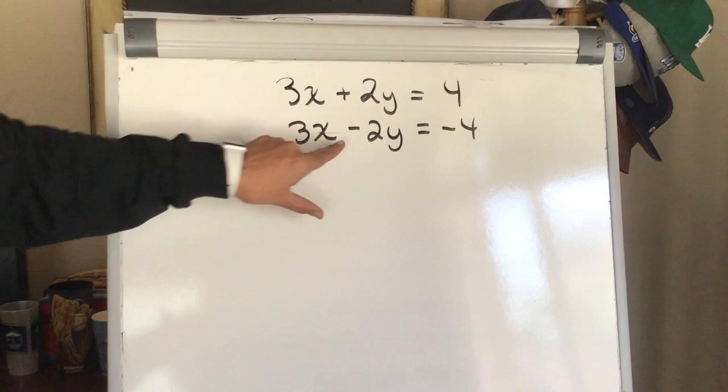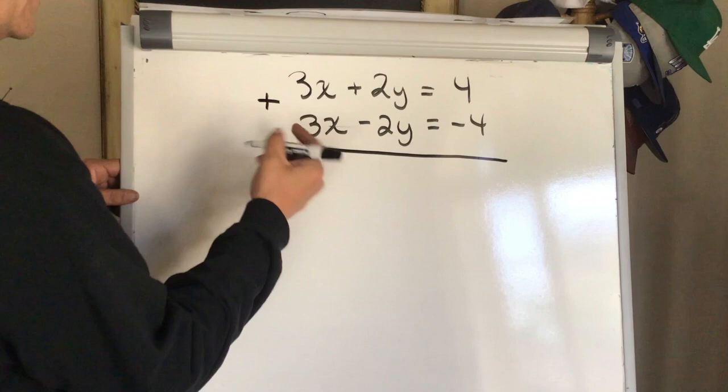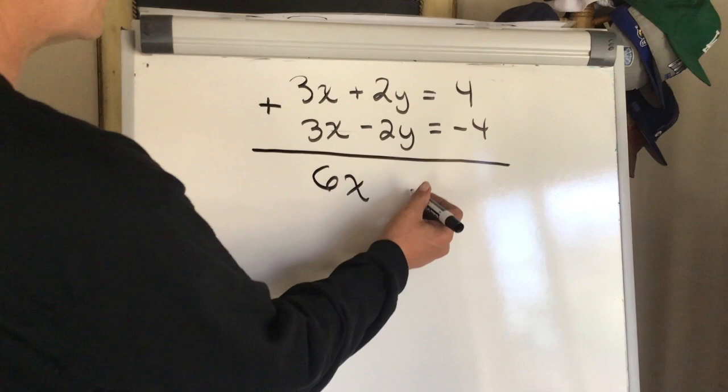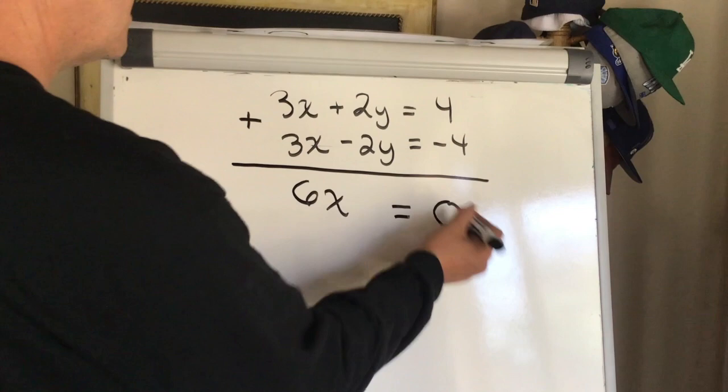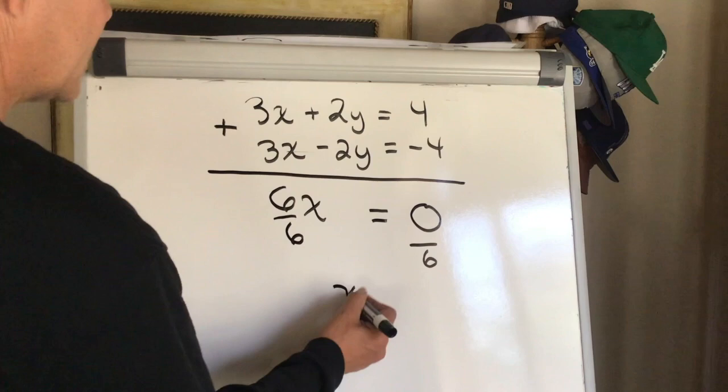So when I combine these or add them, 3x plus 3x is 6x, 2y minus 2y is gone, 4 plus negative 4 is 0. Now to solve for x, I get x is 0.